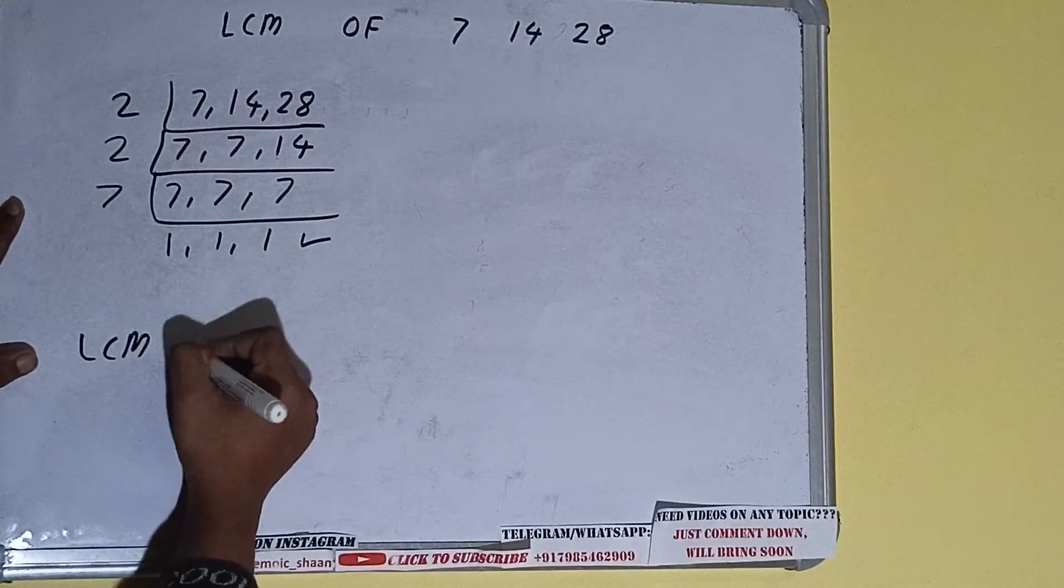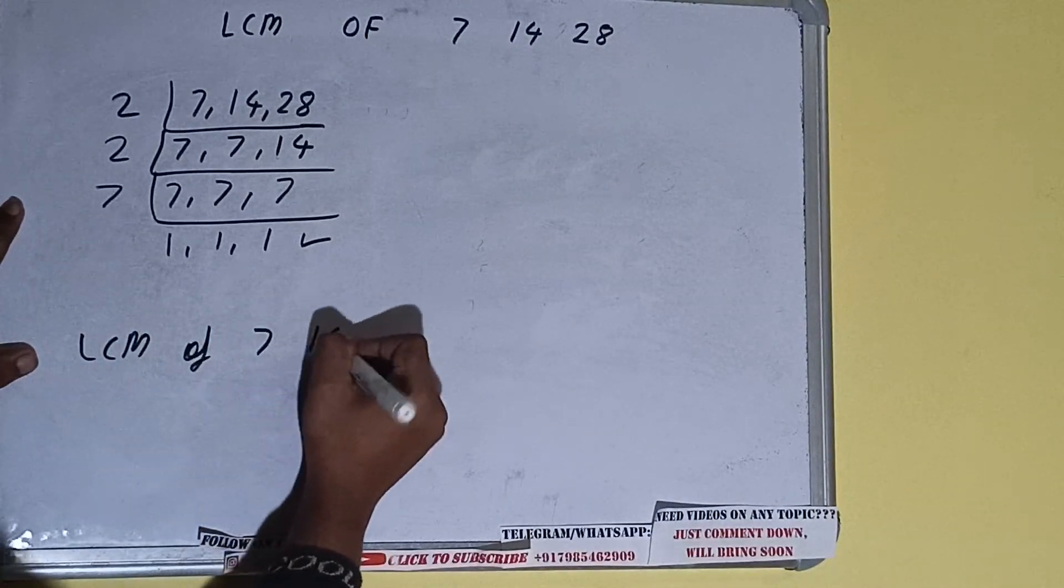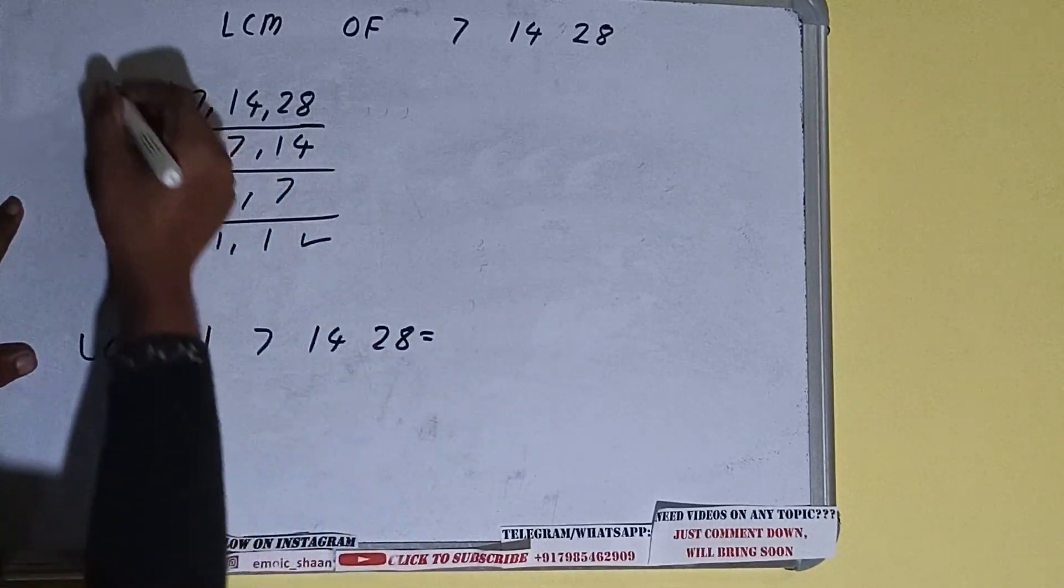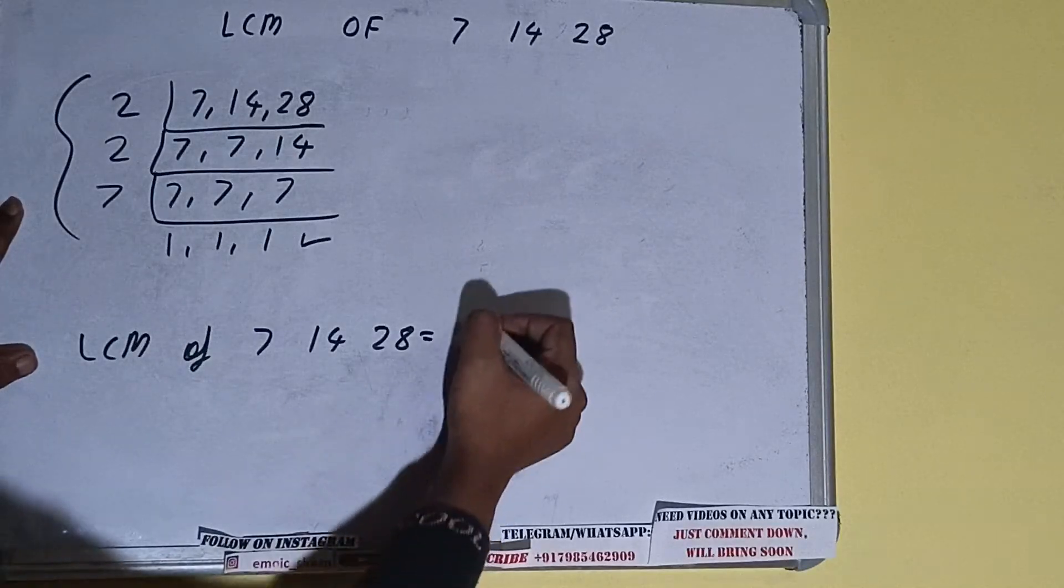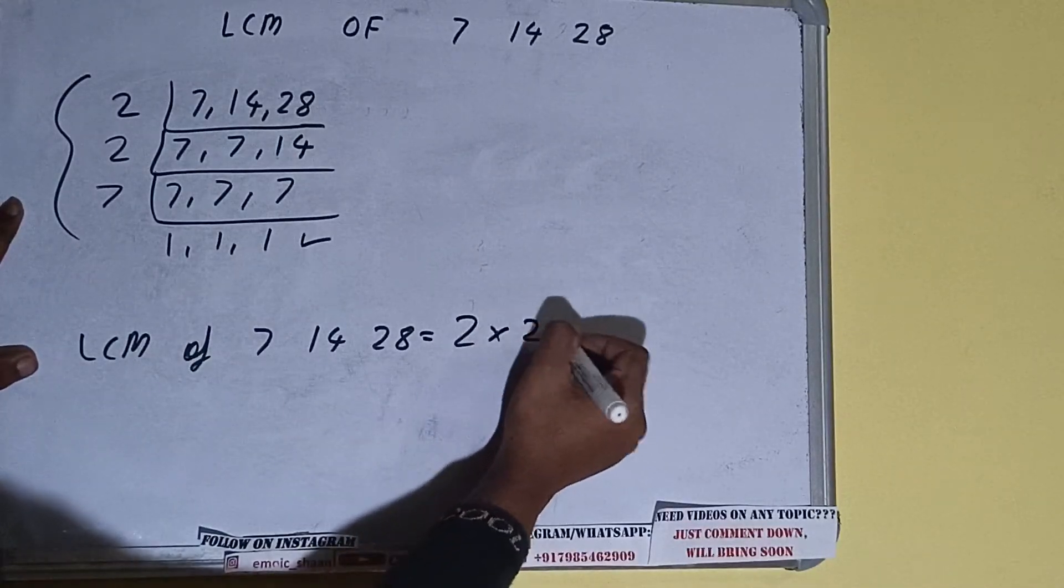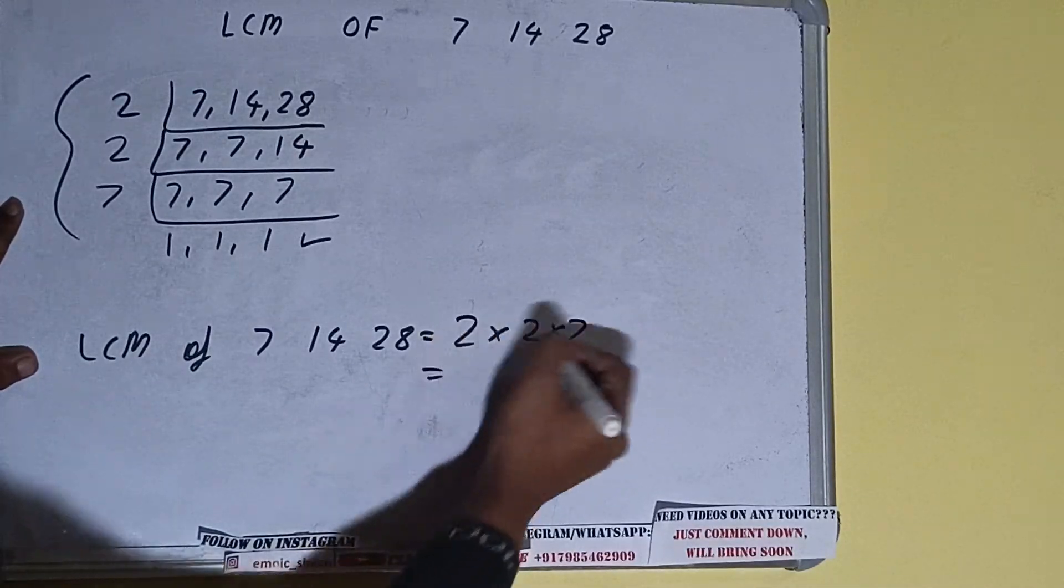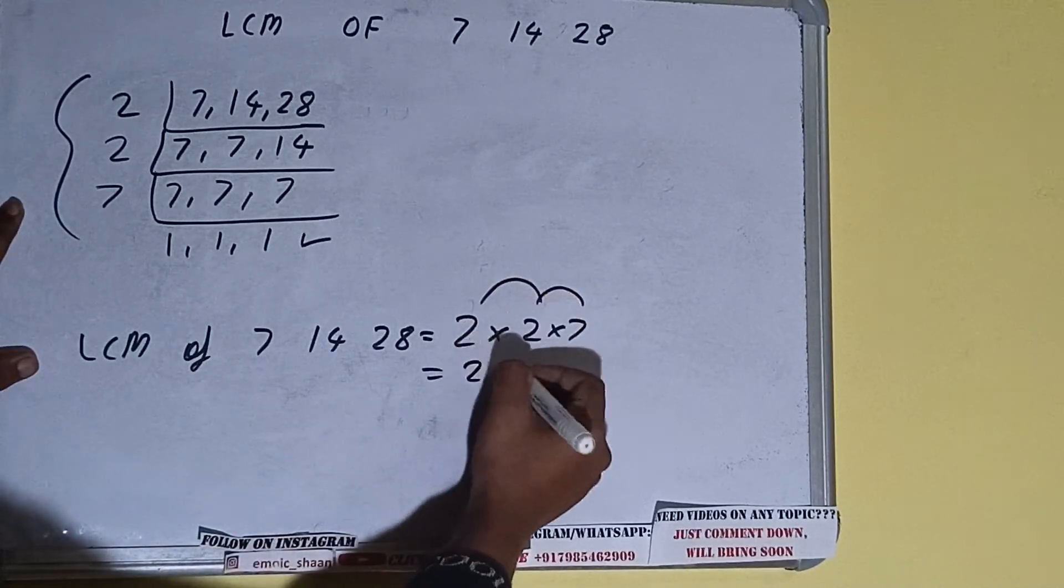That is, LCM of 7, 14, 28 equals multiply whatever we have on the left-hand side, that is 2 times 2 times 7, which is 28. So the LCM will be 28.